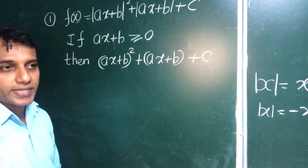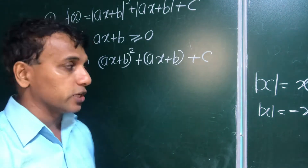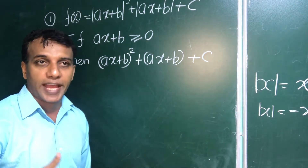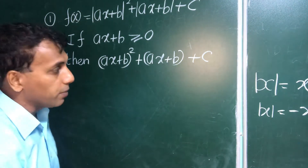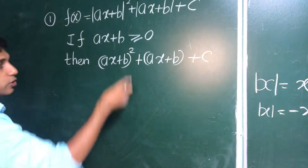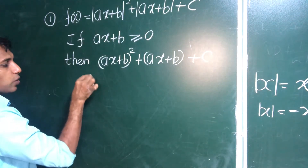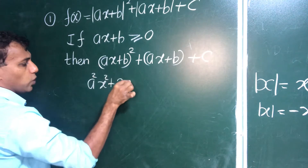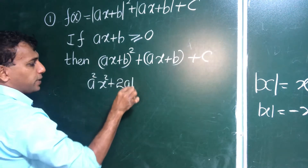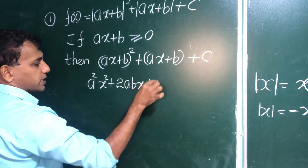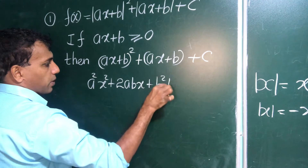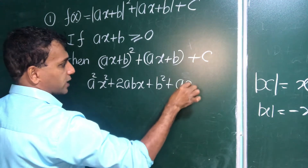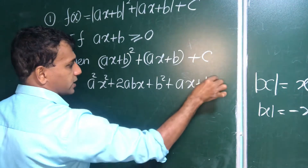We rearrange into one quadratic equation — collecting x squared terms, x terms, and constant terms equal to zero. So we get: a squared x squared plus 2ab·x plus b squared plus ax plus b plus c.